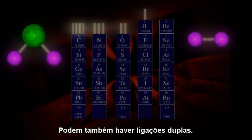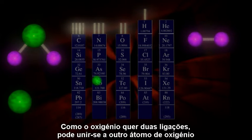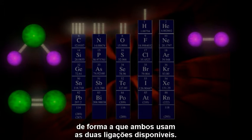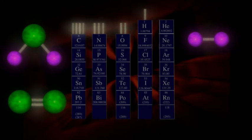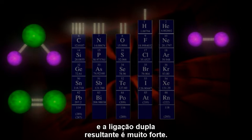Now there can be double bonds as well. Since oxygen wants to make two bonds, it can get together with another oxygen atom in a way that uses both available bondings. This oxygen molecule satisfies the bonding urge of both atoms, and the resulting double bond is very strong.